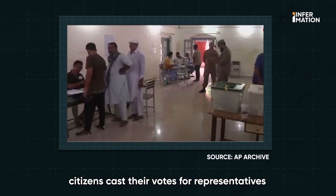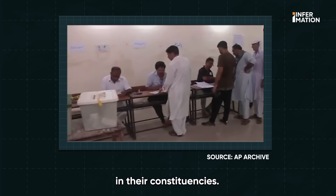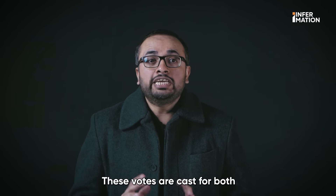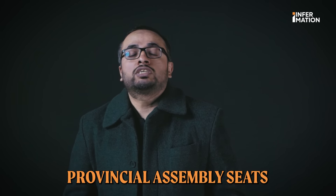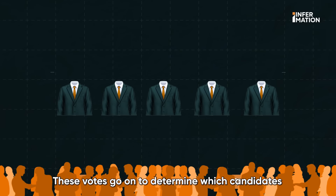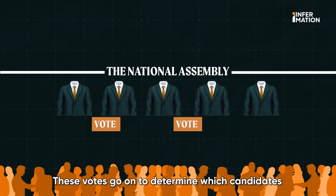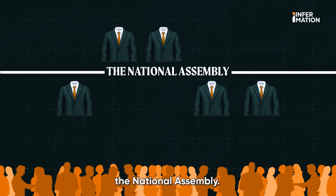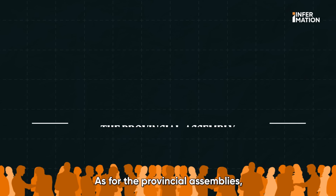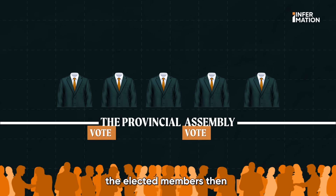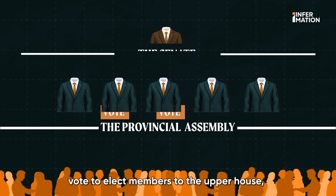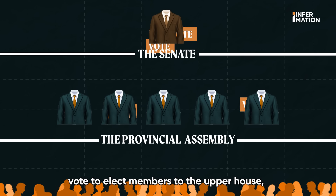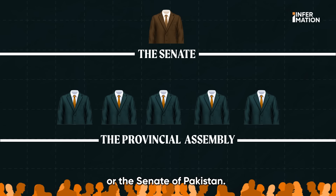Each election season, citizens cast their votes for representatives in their constituencies. These votes are cast for both national and provincial assembly seats, and go on to determine which candidates will make up the lower house of the parliament, the National Assembly. As for the provincial assemblies, the elected members then vote to elect members of the upper house, or the Senate of Pakistan.